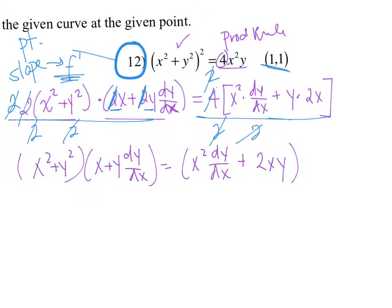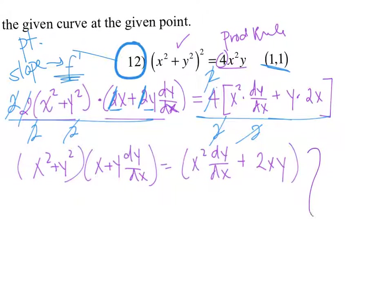You are definitely going to have to FOIL here because you can't factor that out on either side, so you'll have to FOIL it out. Move all your dy/dx terms to one side, all your non-dy/dx terms to the other side, and then isolate. Take your time to finish the algebra, but the calculus is done. We did the derivative implicitly — now it's just algebraic manipulation.